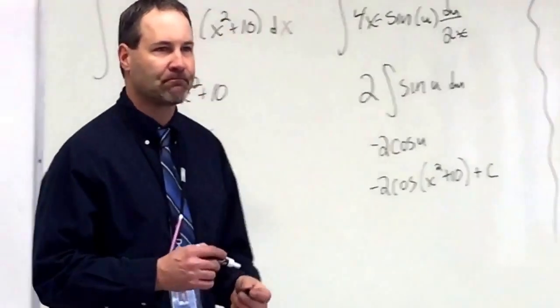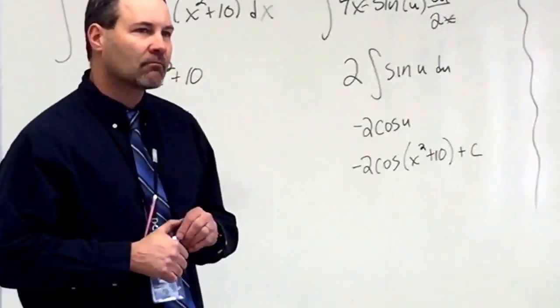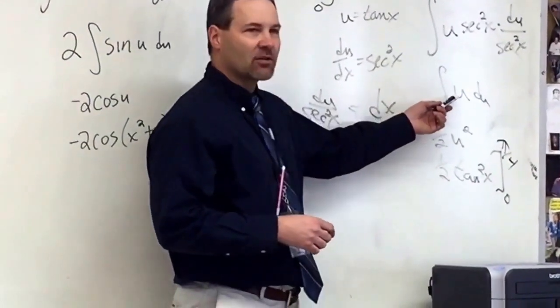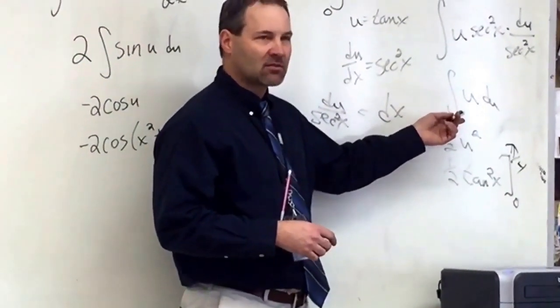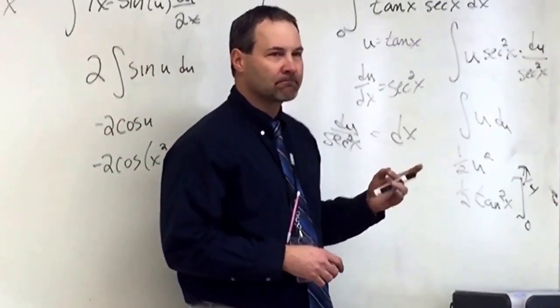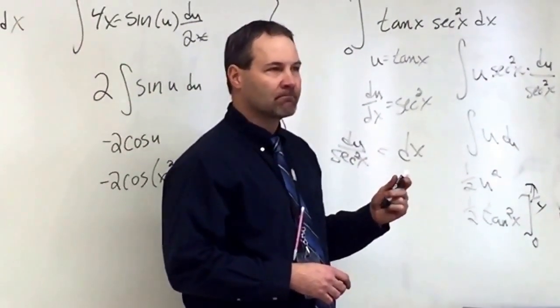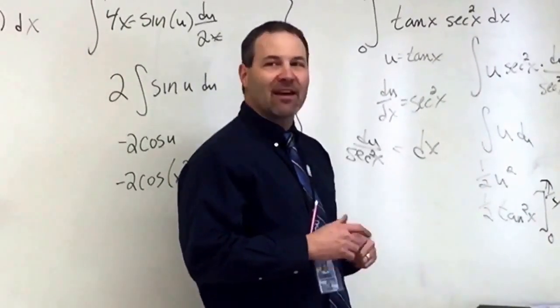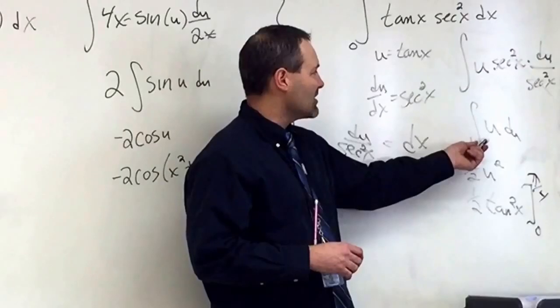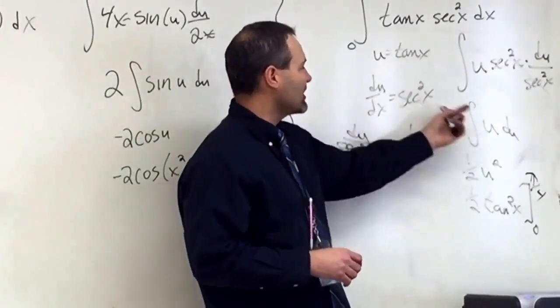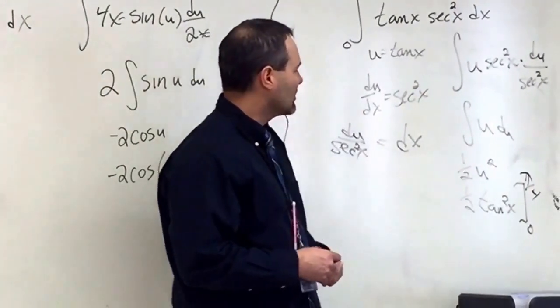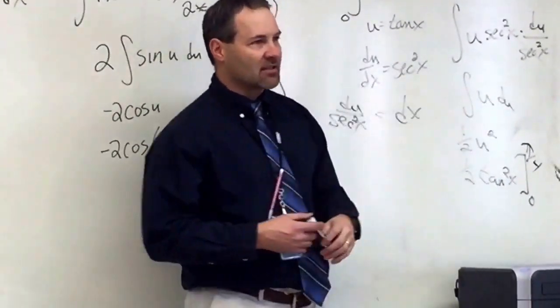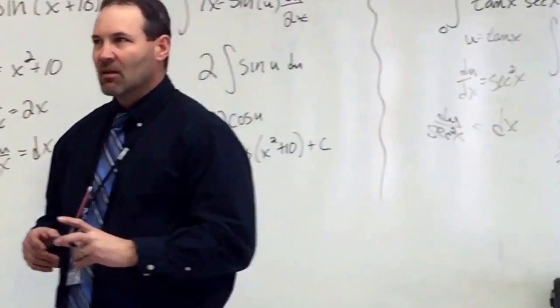How did you get the integral of u du to 1 half u squared? It's like the anti-derivative of x to 1 half x squared. So once you get it in, once you put u back in, you have to take the anti-derivative of that. You worked here to get this. Because now that's when you find the anti-derivative.